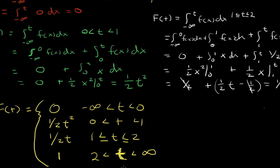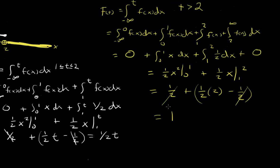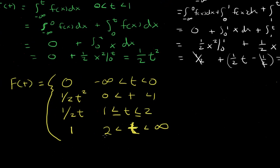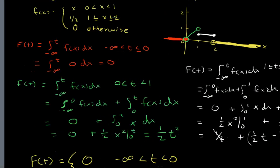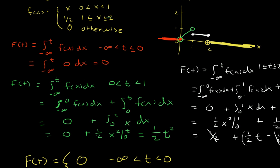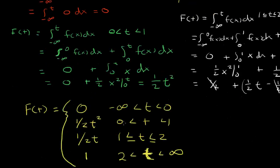Why do we use t instead of x? When computing this integral, if we used f of x and integrated from 0 to x of x dx, it can get confusing with so many x's. Using t is standard in statistics, but it's really a personal preference — the function is what matters, not the variable name. You can replace all the t's with x's in your final answer and that's also valid.